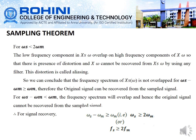If ω_s is less than 2·ω_m, the lower frequency components in X_s overlap the higher frequency components of X(ω), so there is distortion and X(ω) cannot be recovered from X_s(ω) by using any filter. This distortion is known as aliasing. We can conclude that the frequency spectrum of X(ω) is not overlapped when ω_s minus ω_m is greater than or equal to ω_m, and therefore the original signal can be recovered from the sampled signal.